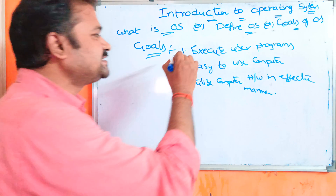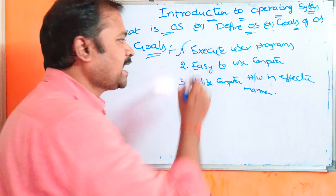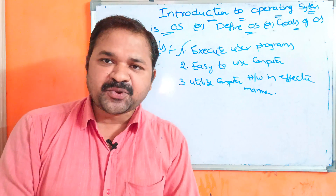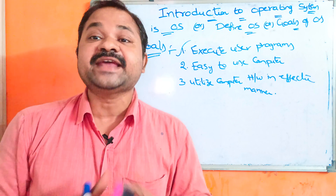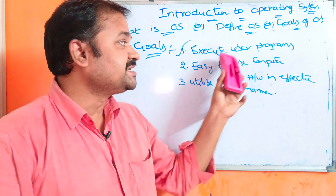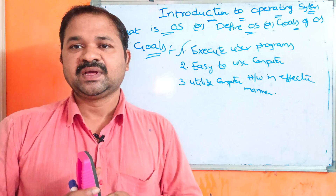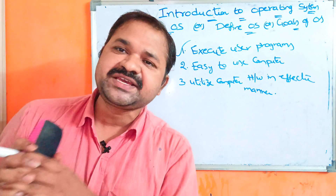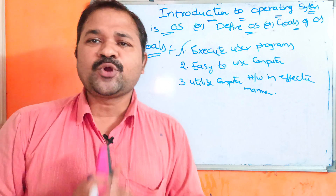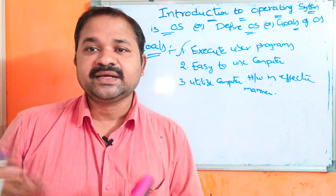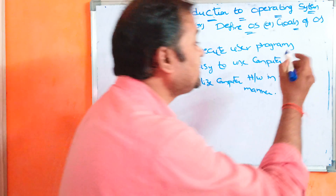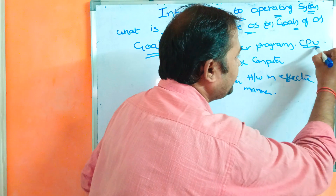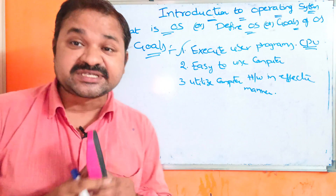The first goal of the operating system is to execute user programs. The operating system provides an environment to execute user programs. Actually, the operating system cannot execute a program by itself — a program or any task is executed by the CPU, the central processing unit, which is nothing but a processor.